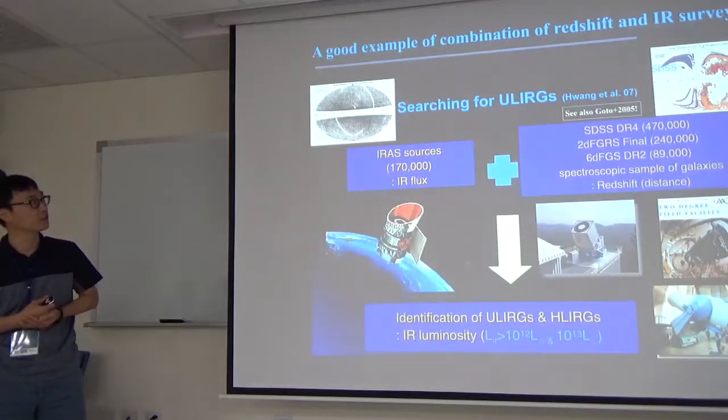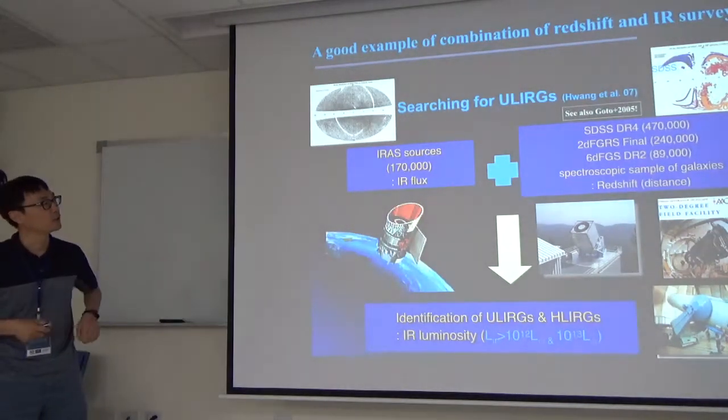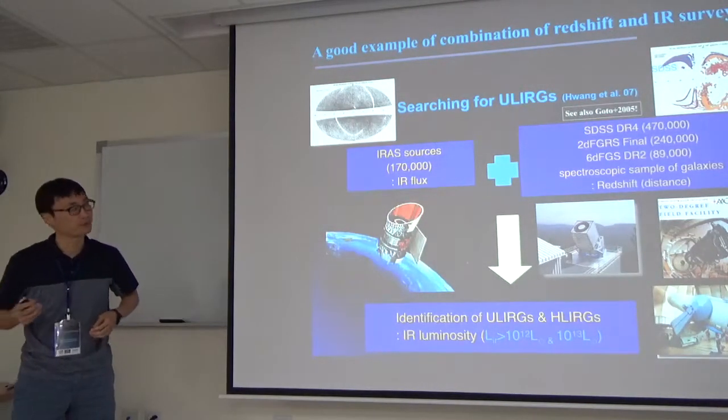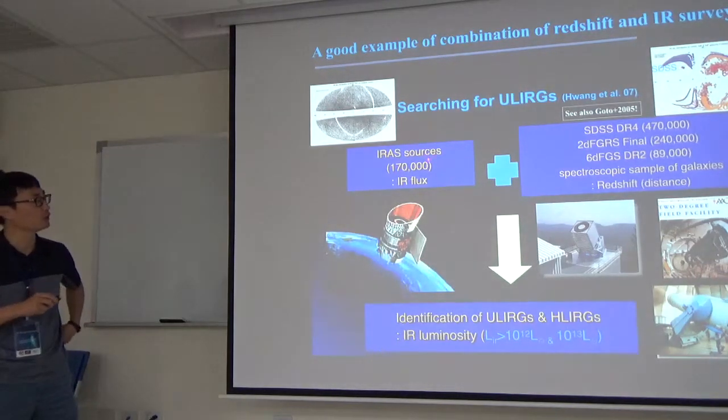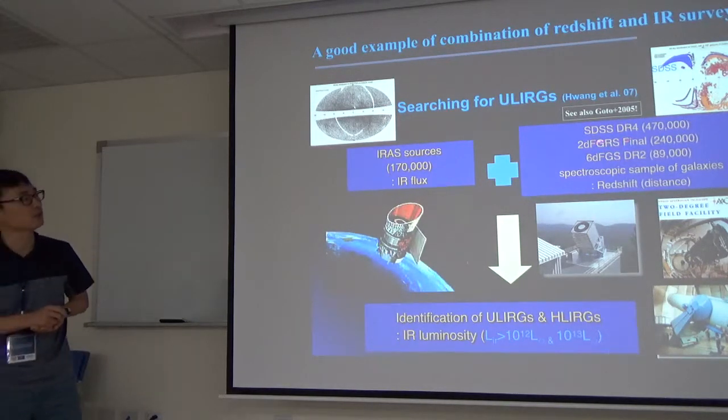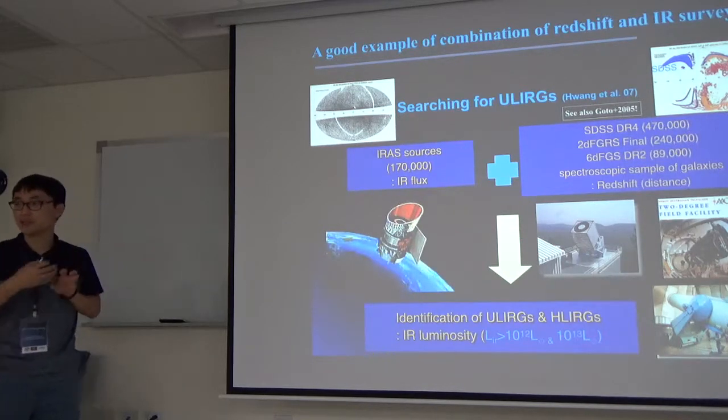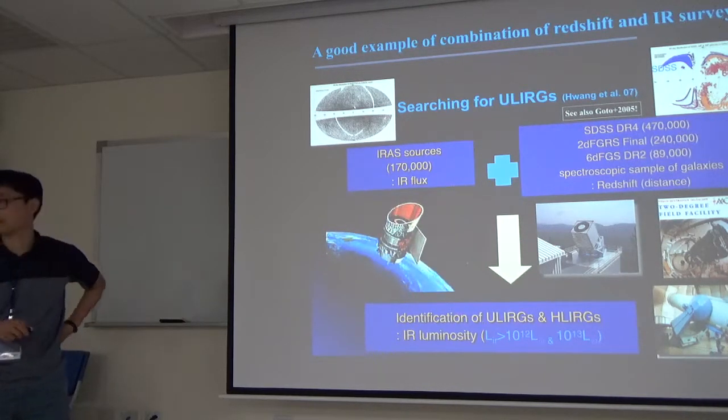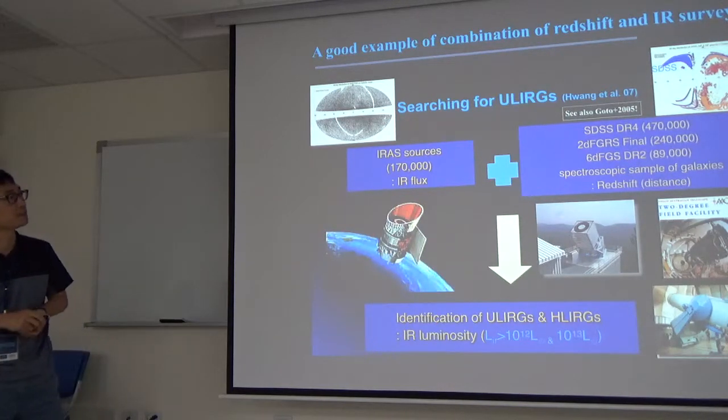Speaking of redshift surveys, there is a good example of combination of redshift and infrared surveys. Actually there was a nice work by Tomo in 2005. The idea is we can combine two catalogs, one from IRAS and the other one from many redshift surveys including Sloan, 2dF and 6dF. By combining these two, we can easily identify ultra-luminous and hyper-luminous galaxies. This became my first paper when I was a graduate student.